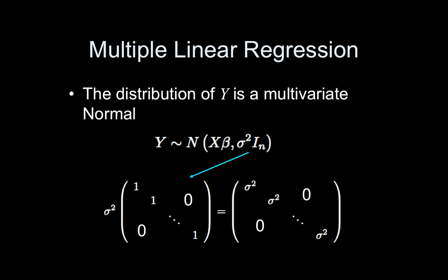I don't want to forget the variance — that's always an important player in regression, and it's usually the troublemaker. If your tests aren't significant, it's typically because your variance is too big — or there's no effect. The distribution of y can be described as a multivariate normal; think of it as a multi-dimensional normal distribution. The mean is now given by a vector, X beta — an n by 1 vector. And the covariance matrix is a matrix: sigma squared times an n by n identity, which looks like the thing I'm showing on the bottom.